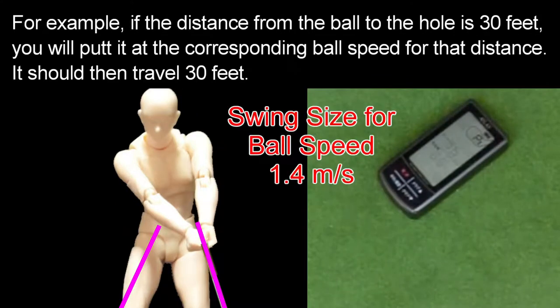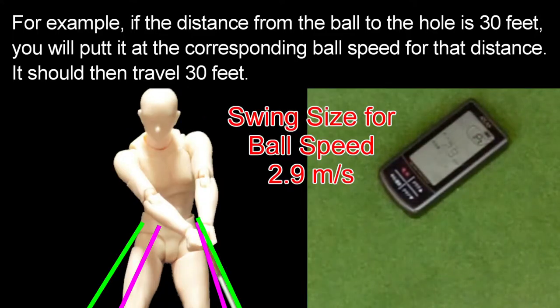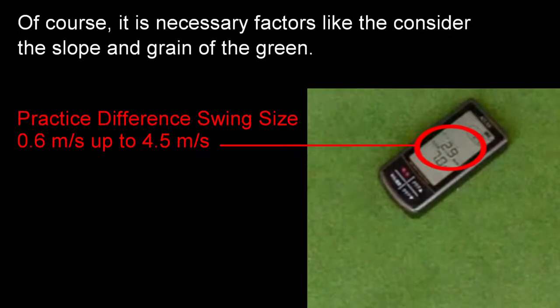For example, if the distance from the ball to the hole is 30 feet, you will putt it at the corresponding ball speed for that distance. It should then travel 30 feet. Of course, it is necessary to consider factors like the slope and grain of the green.